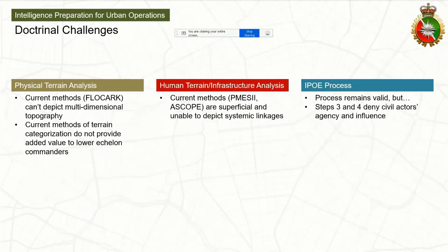Some of the doctrinal challenges I identified. Starting with physical terrain analysis, current methods we use — FLOCART — really aren't very good for depicting the multidimensional topography of the urban environment. Furthermore, current methods of terrain categorization like the commercial ribbon, urban core, or residential don't really provide any added value to lower echelon commanders. There's not a lot of analytical value to that, so I present a different way of looking at it.